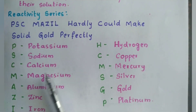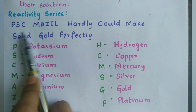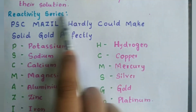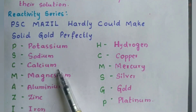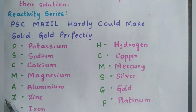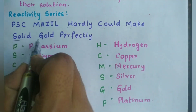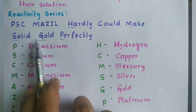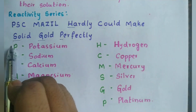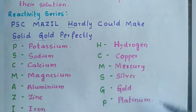I have explained the reactivity series in previous chapters — acids and bases and chemical reactions — but I am going to do it once again. Here is an easy mnemonic to remember: 'PSE Masyl hardly could make solid gold perfectly.' P stands for potassium, S for sodium, C for calcium, M for magnesium, A for aluminium, Z for zinc, I for iron, L for lead, H for hydrogen, C for copper, M for mercury, S for silver, gold, platinum. Moving from potassium to platinum, reactivity goes on decreasing — potassium is highly reactive and platinum is least reactive.